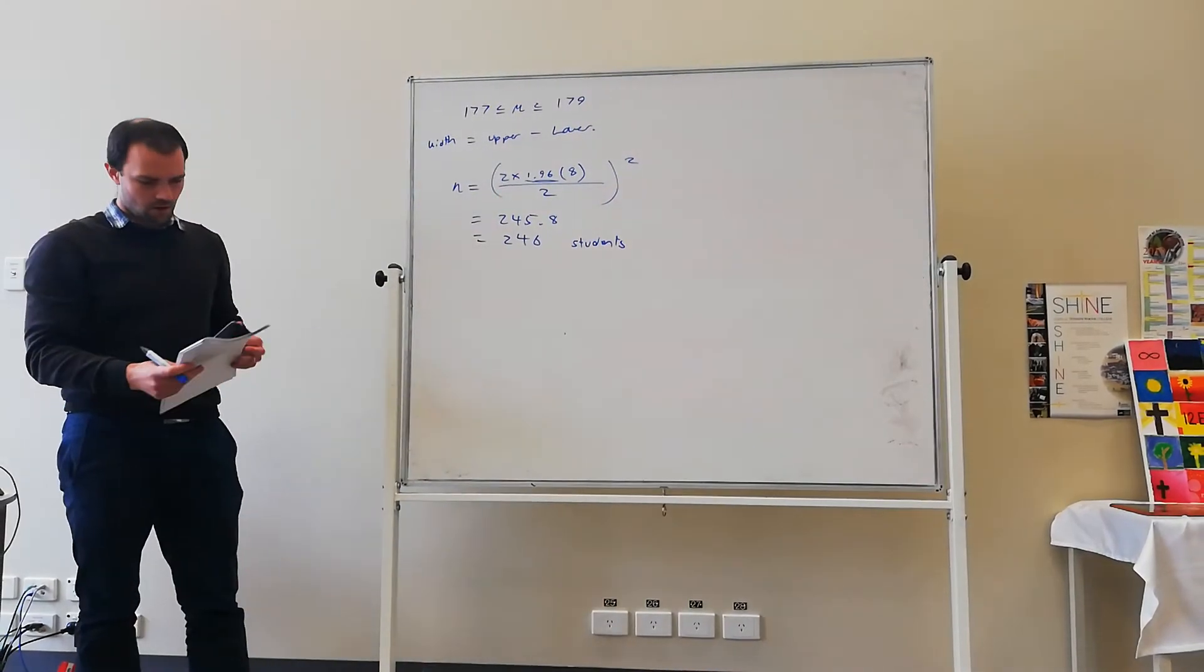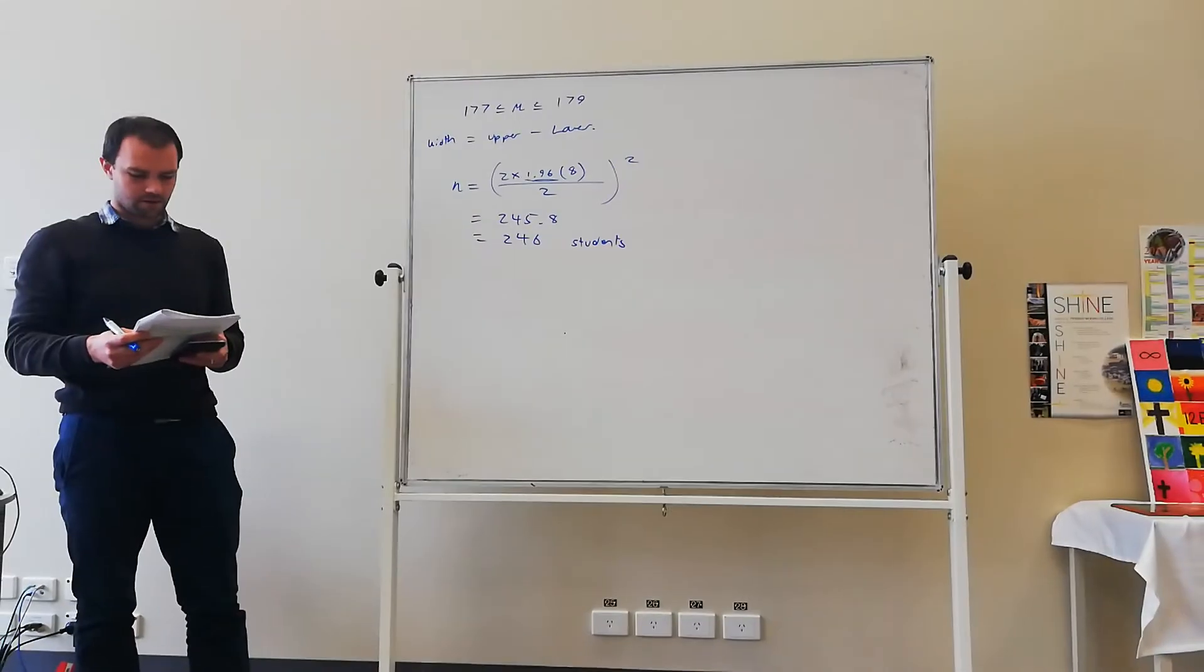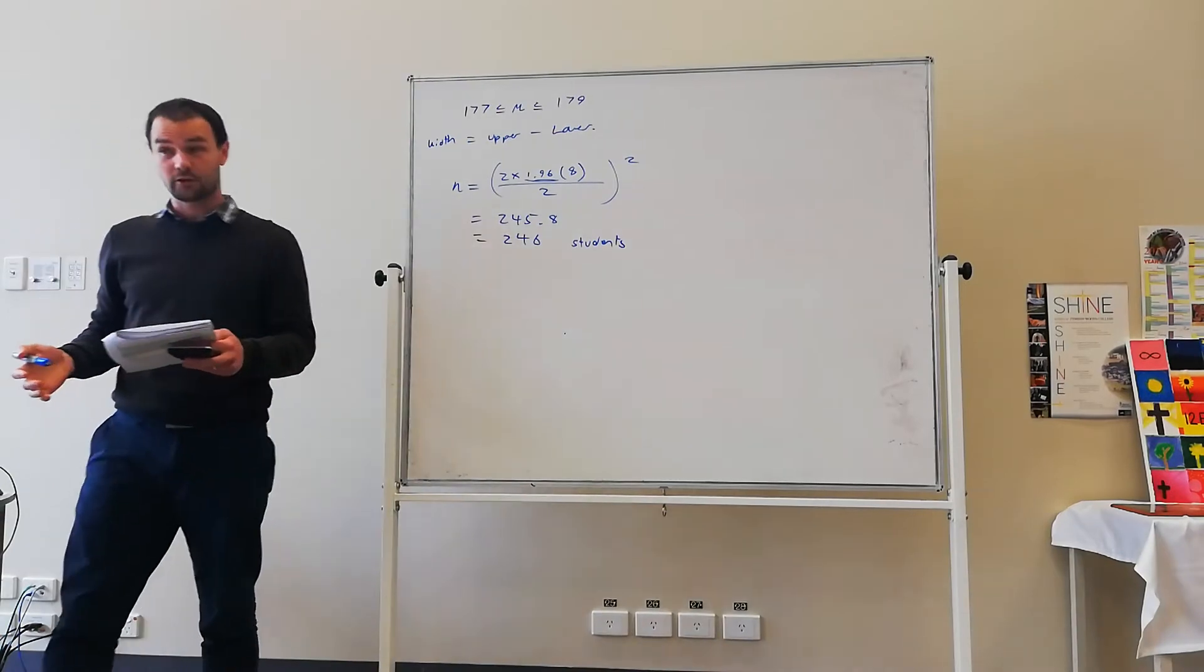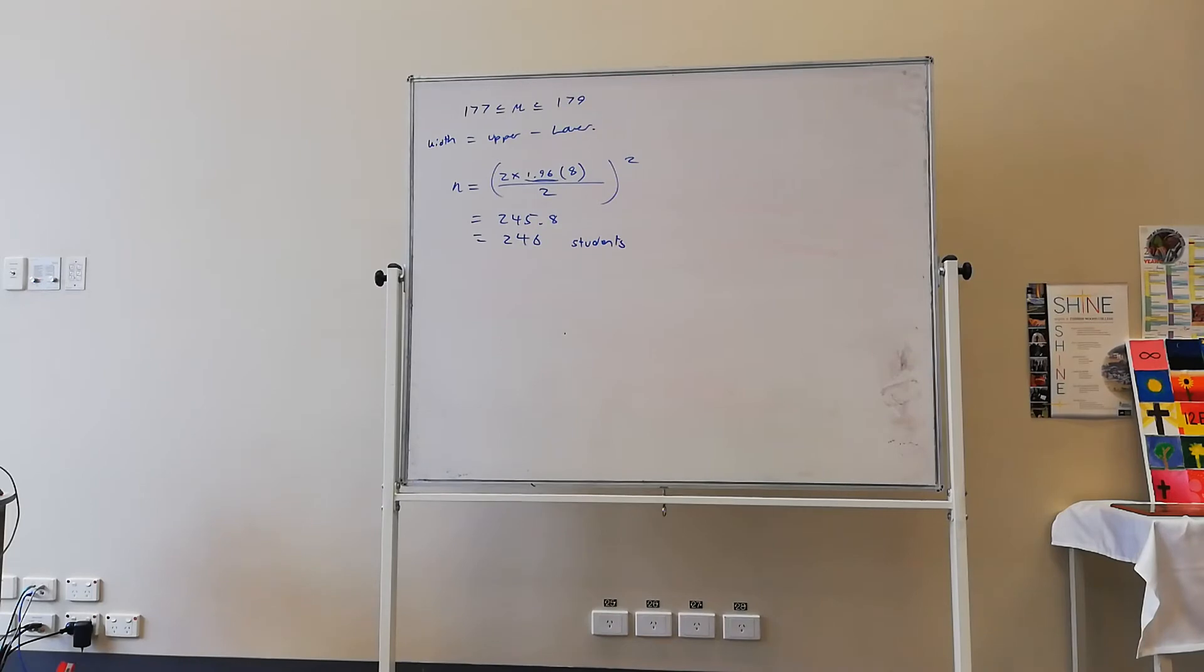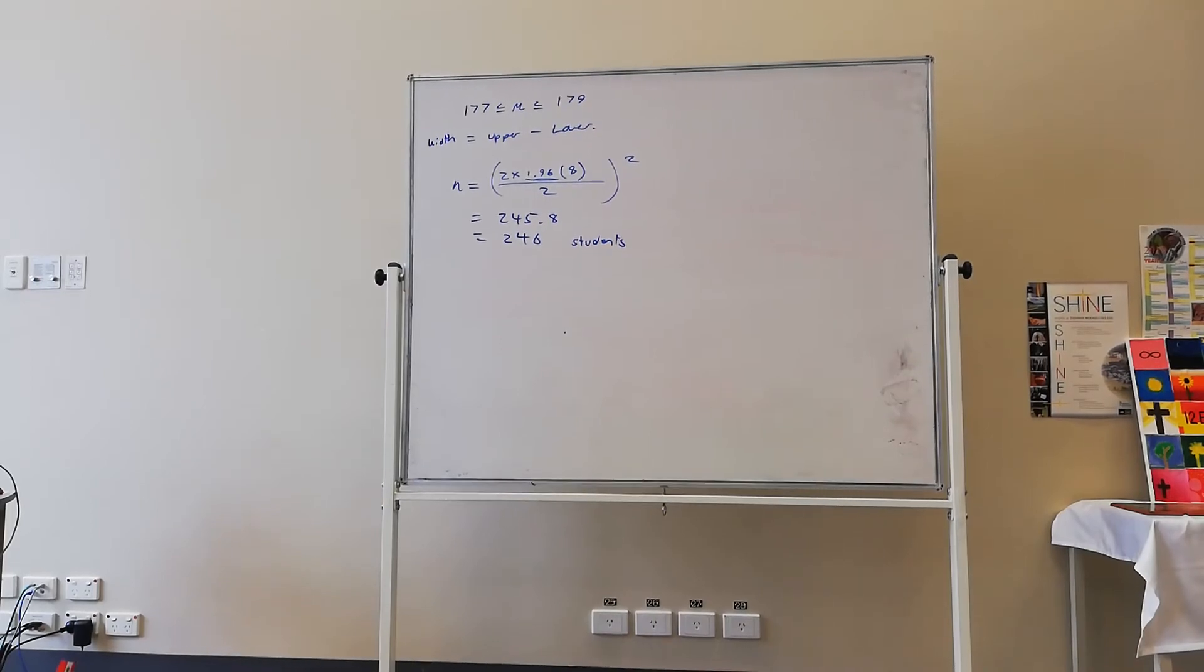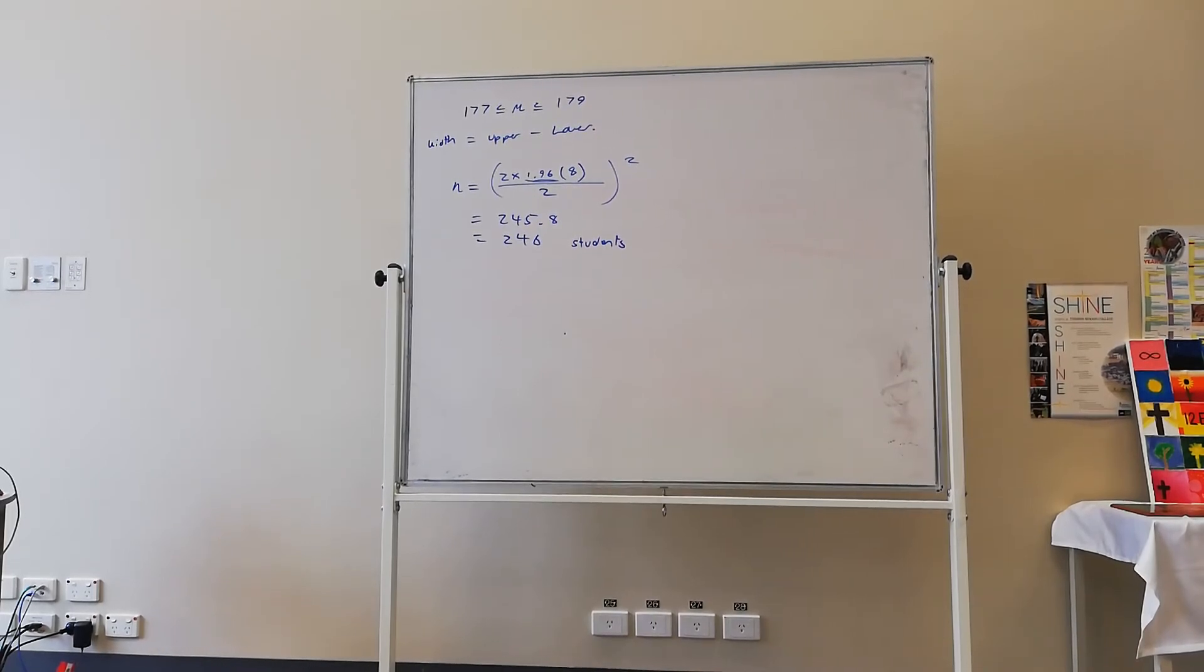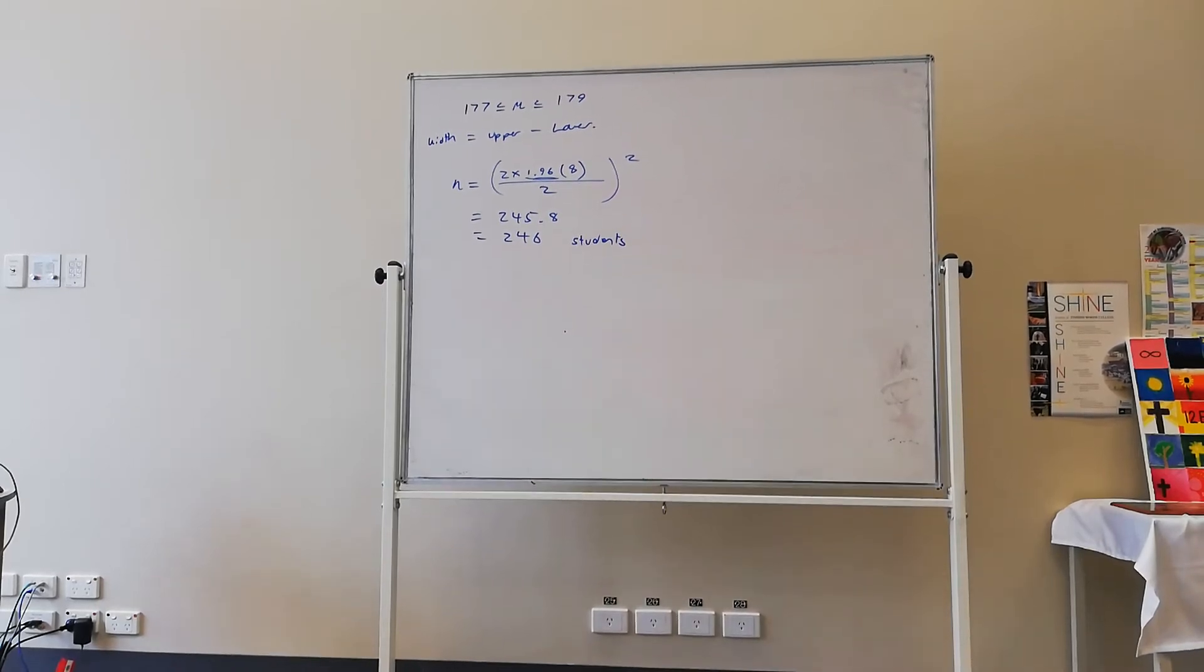Okay? So that's 9d.2. And then we'll move on to 9d.3. And we don't really need to do any calculations here. We're just going to do a bit of talking. So if we look at 9d.3, here we've got the confidence interval for height. And it's between 175.5 to 180.47.